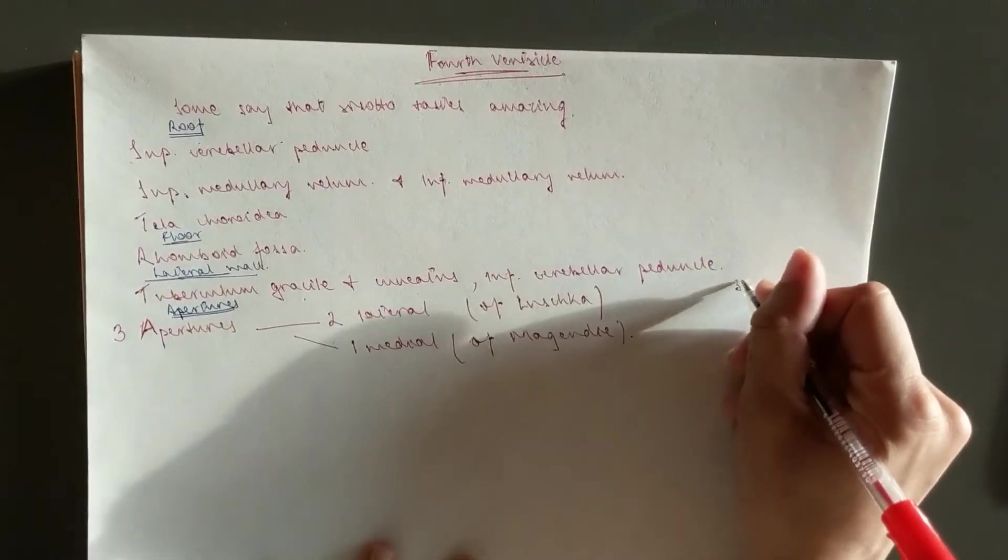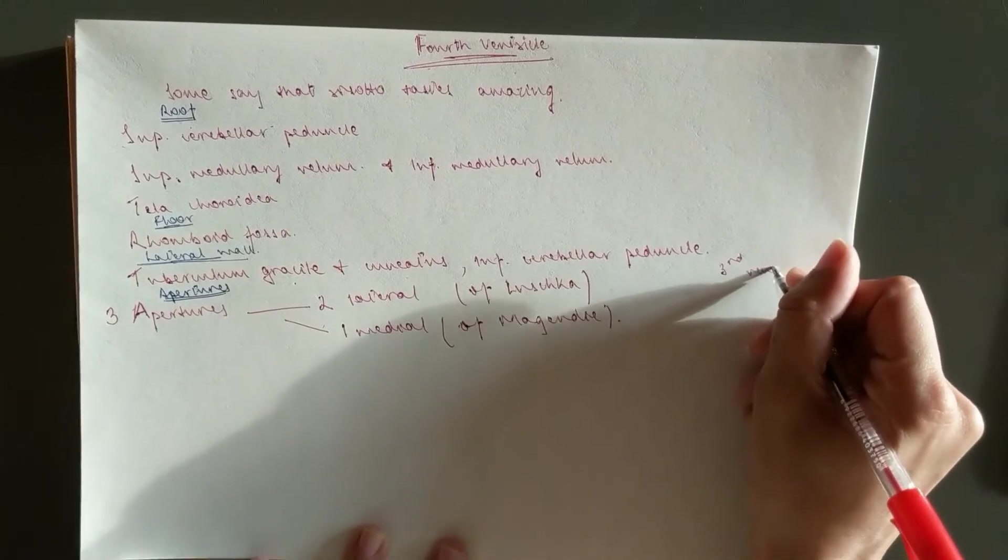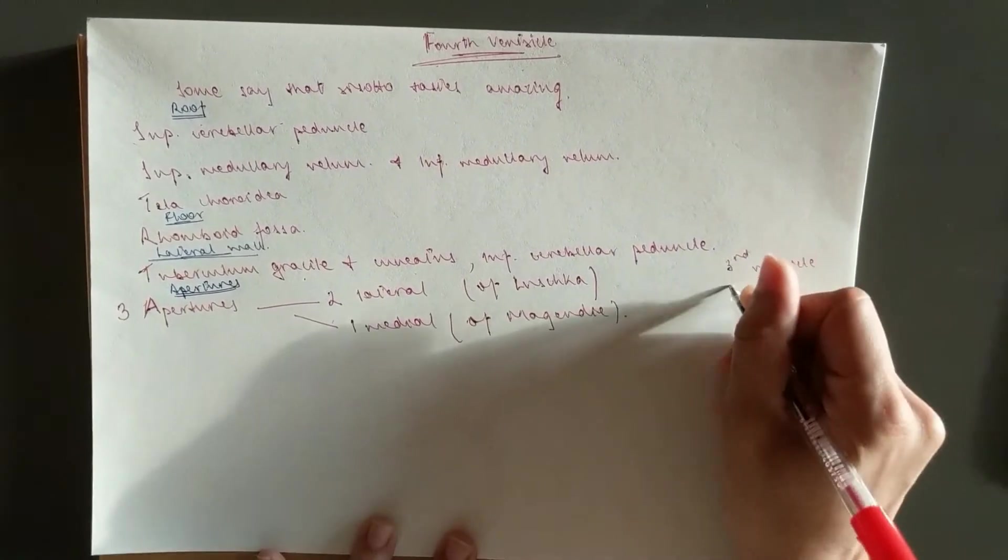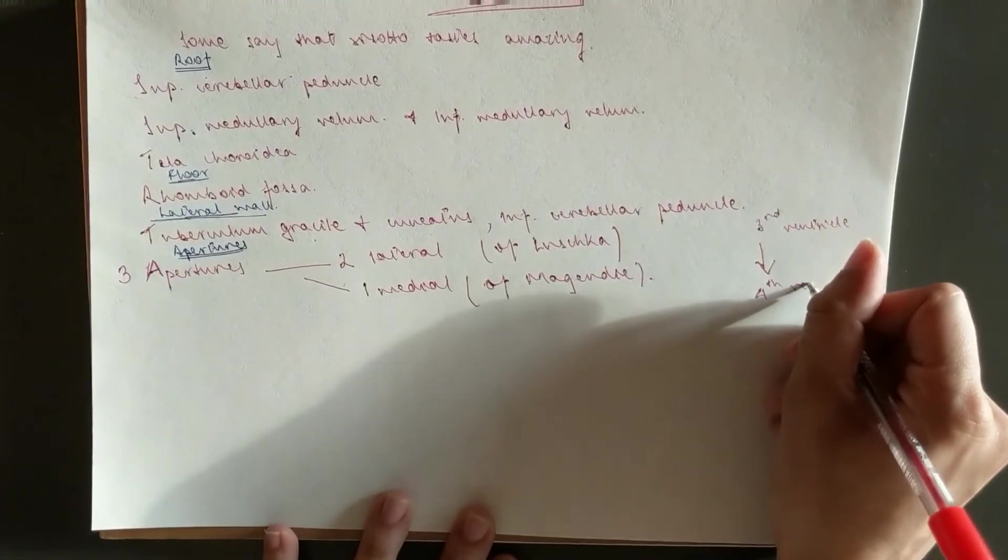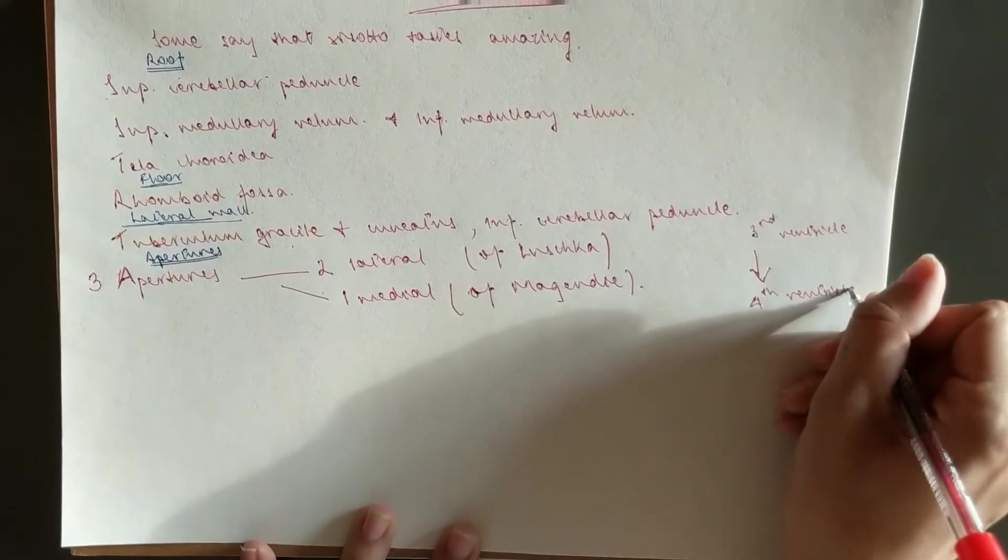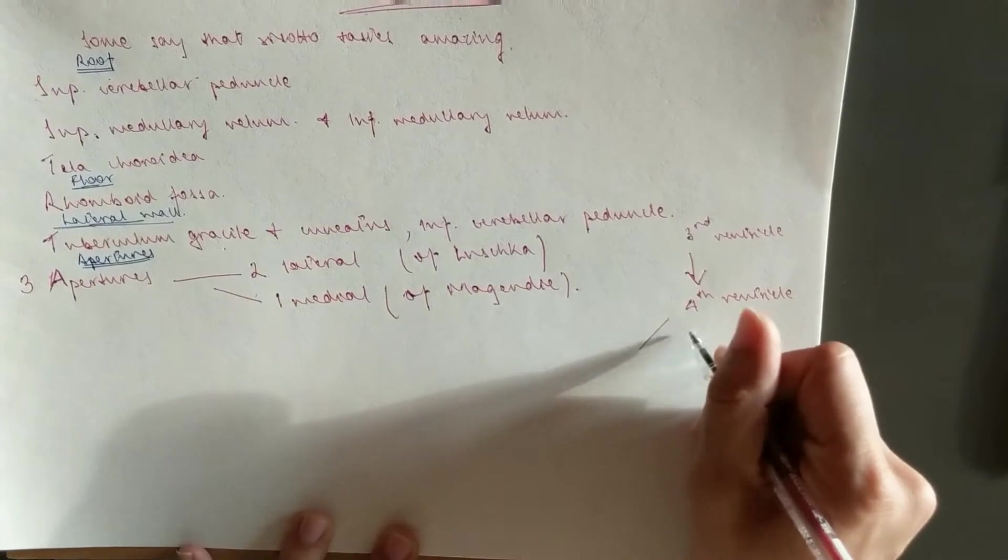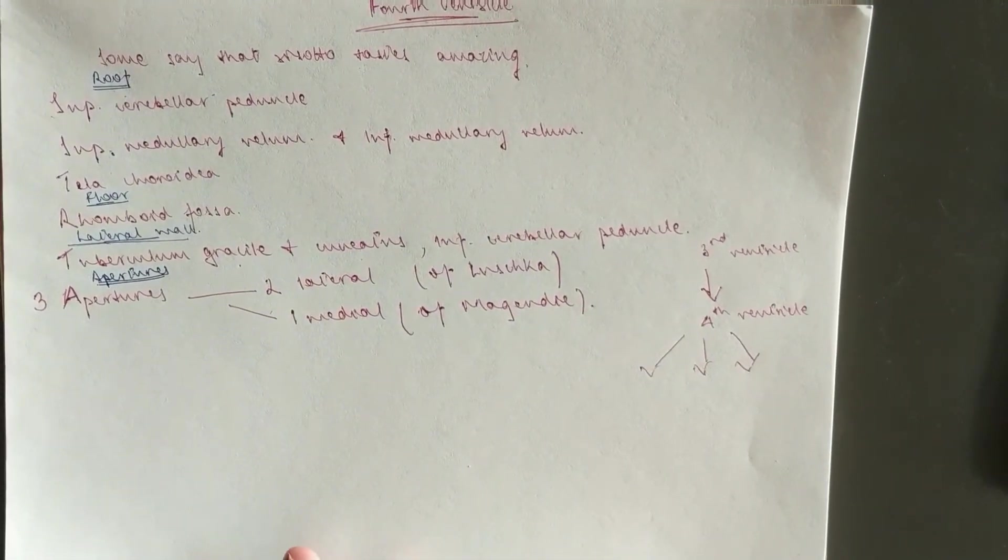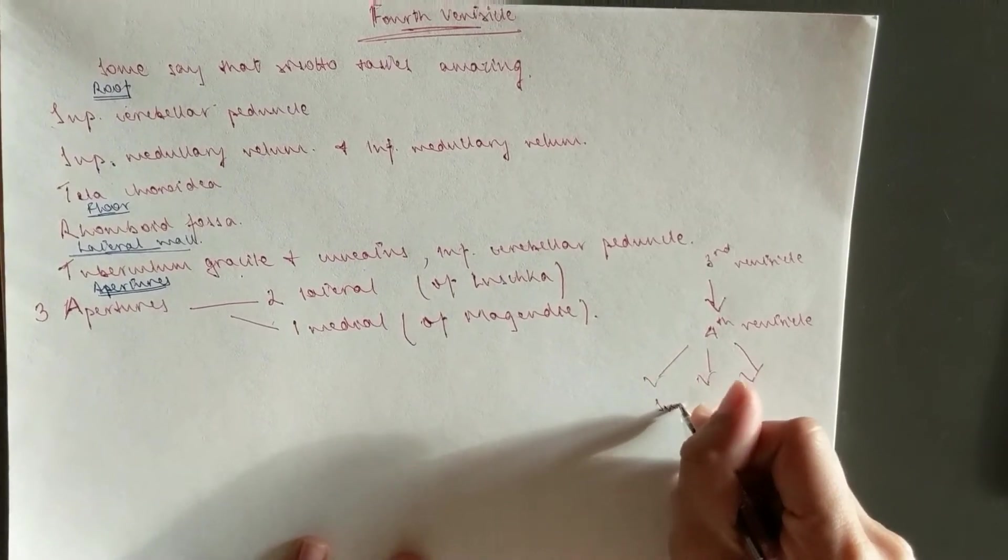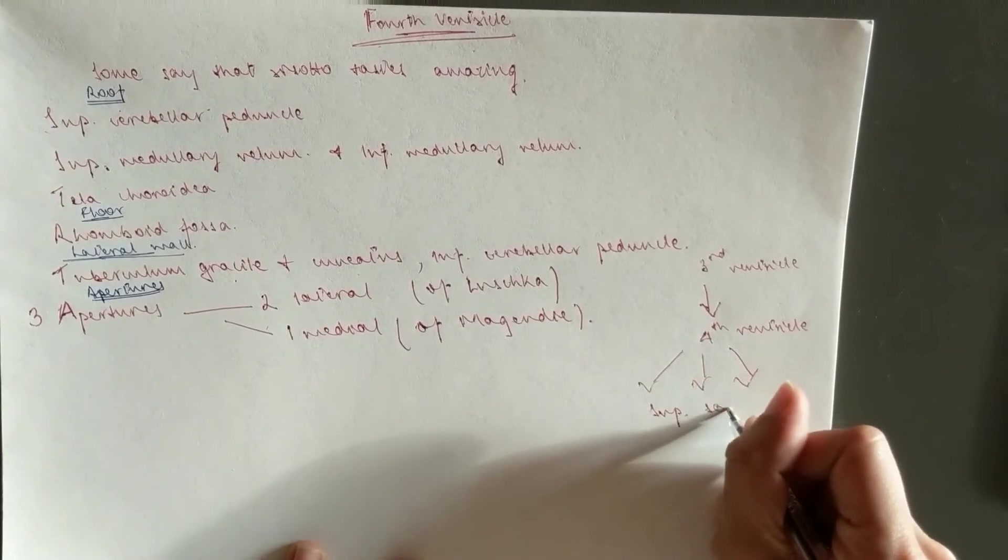So you have the third ventricle. Through the cerebral aqueduct which is in the midbrain, you go to the fourth ventricle. And through these three openings, you go to the subarachnoid space which goes to the superior sagittal sinus.